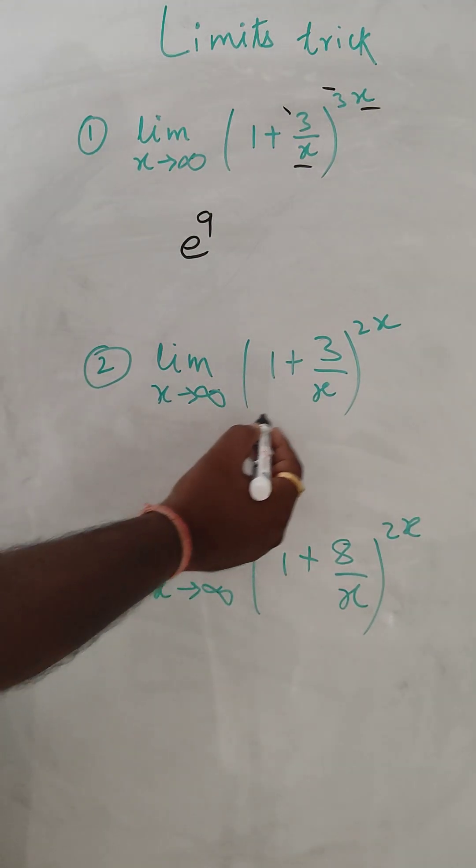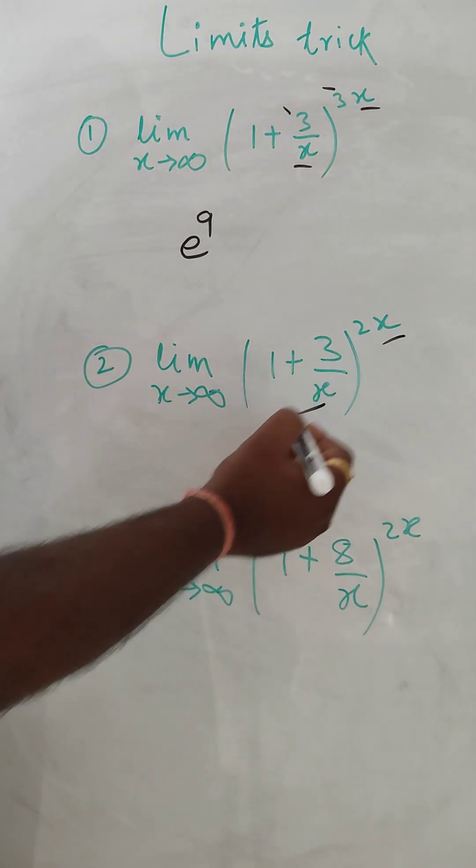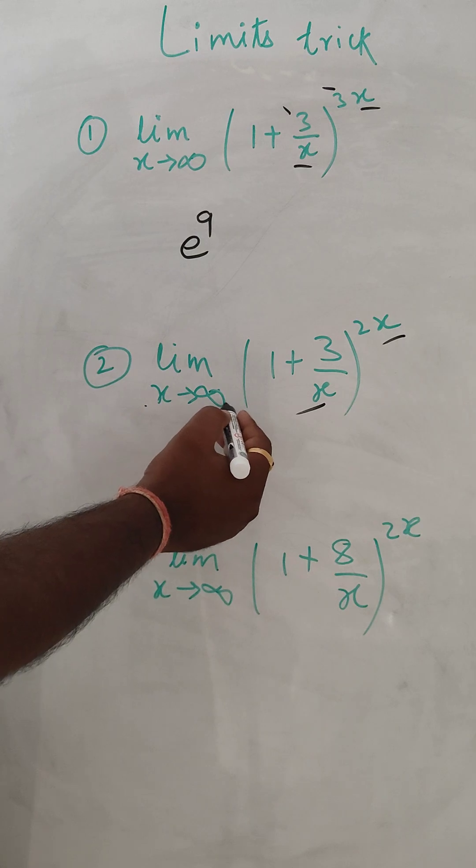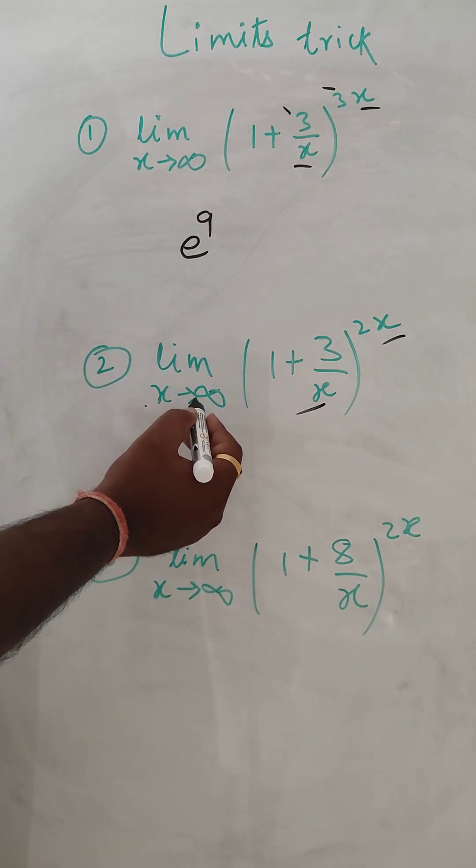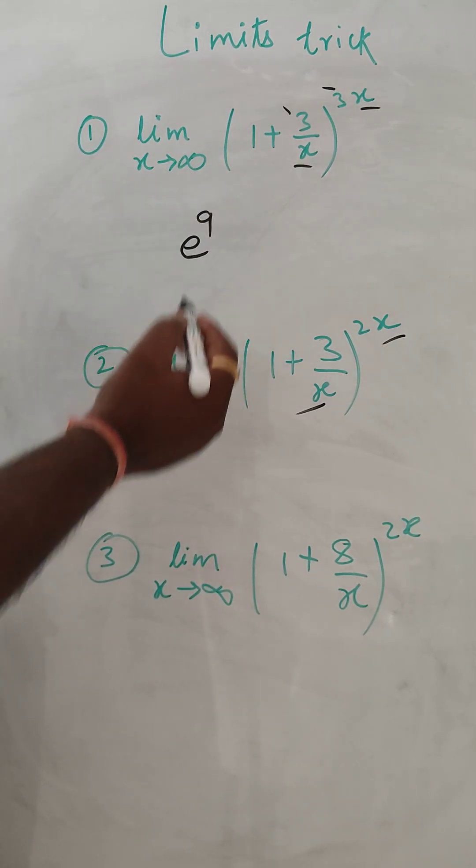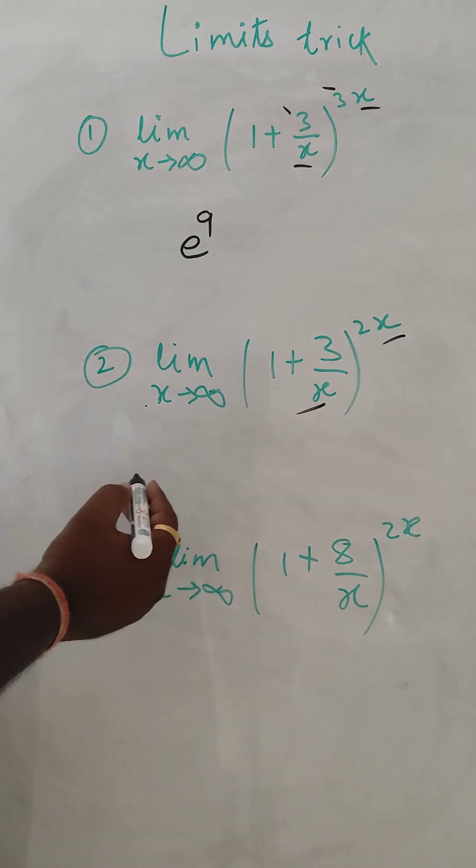So here in this question, the x and x are the same correctly, and x tends to infinity. X tends to infinity should also be there. Here also it is there, so here also it is there.